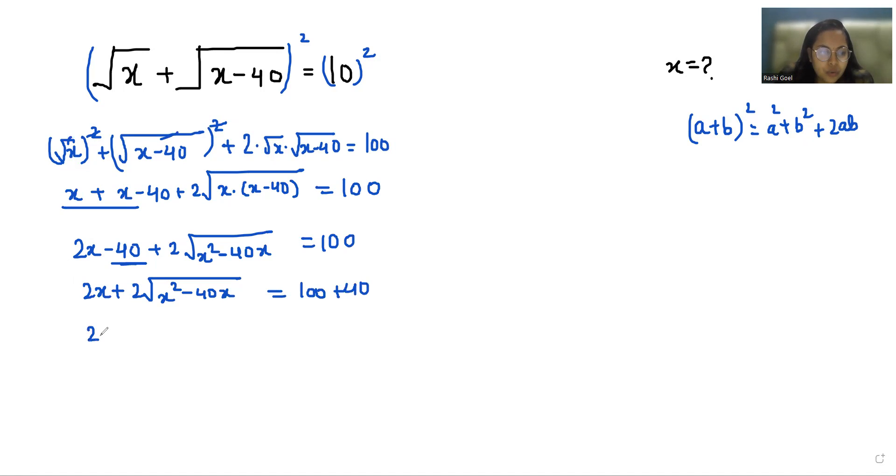So 2 is common. So x plus under root x square minus 40x equals 140. If I divide both sides by 2, x plus under root x square minus 40x equals 70.